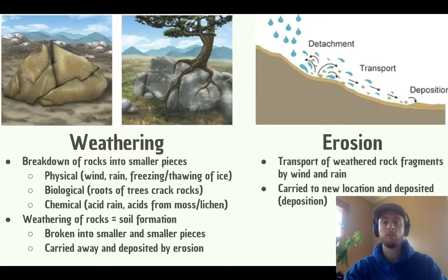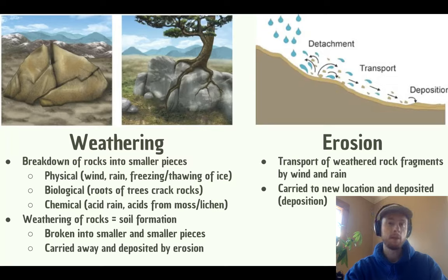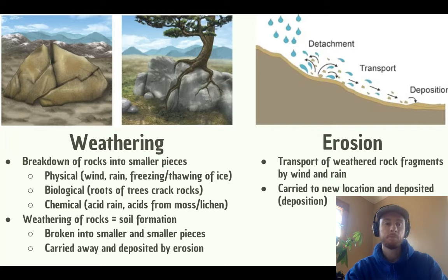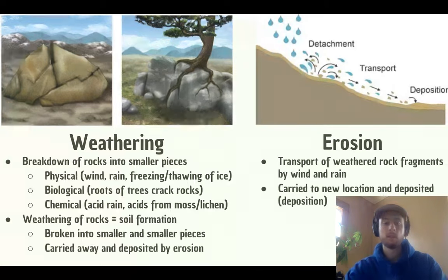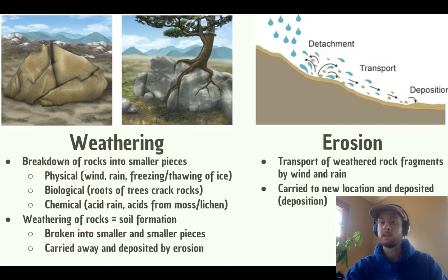Now we'll talk about weathering and erosion — they're very important and sometimes confused with each other. Weathering is just the breakdown of rocks, and it can happen in three ways: by wind and rain, which we call physical weathering; by chemicals, such as acids in acid precipitation that break down rock; and by biological breakdown, where tree roots grow into cracks in rocks and break them apart. Another form of physical weathering is when rain seeps into cracks in rocks, freezes, expands, and breaks the rock open further. Weathering is how soil formation actually begins — rocks are broken down into smaller and smaller pieces that will ultimately make up soil.